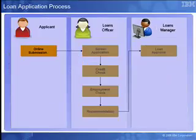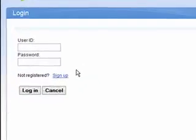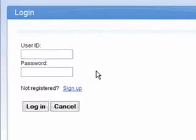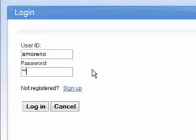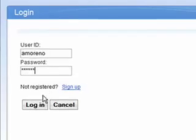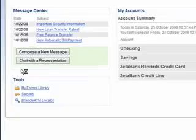Our scenario begins with Albert Marino, a hotel front desk manager and Zeta Bank customer. Albert has been invited at short notice to join some friends on a once-in-a-lifetime vacation. Unfortunately, the cost of this holiday will exceed the limit of his line of credit, so he has decided to apply for an unsecured personal loan. Albert is able to quickly apply for a loan from home, as Zeta Bank provides access to his bank account and services via their website.